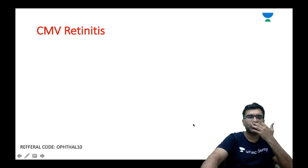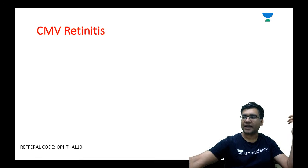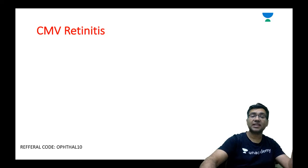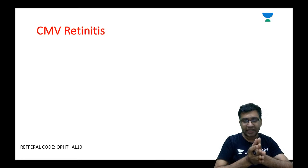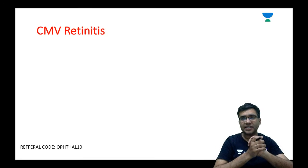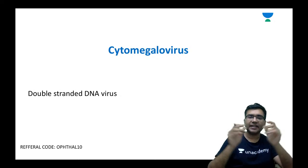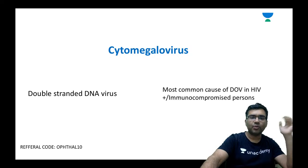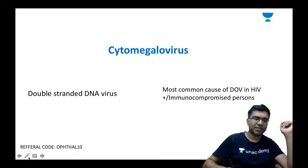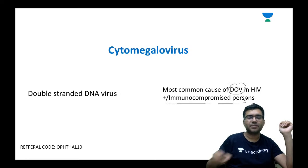With this I move to my next topic — CMV retinitis. CMV is cytomegalovirus retinitis. It is a double-stranded DNA virus and it is the most common cause of diminution of vision in HIV positive or immunocompromised patients.